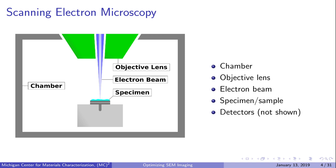Here is a basic schematic of a scanning electron microscope. In the most general case, a specimen or sample is mounted and loaded in the SEM chamber. The electron beam exits the objective lens and hits the specimen, generating various signals. Certain signals can be collected by the detectors and then converted to an image on the computer.